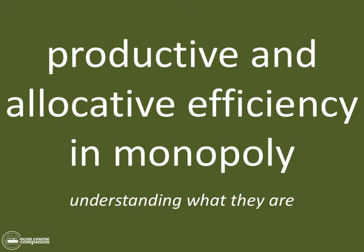We're going to demonstrate on a diagram where a monopoly would operate if it were trying to be as productively efficient as possible and if it were trying to be as allocatively efficient as possible. Productive efficiency is about being as productive as they possibly could within the firm, while allocative efficiency has to do with what would be best for society as a whole.